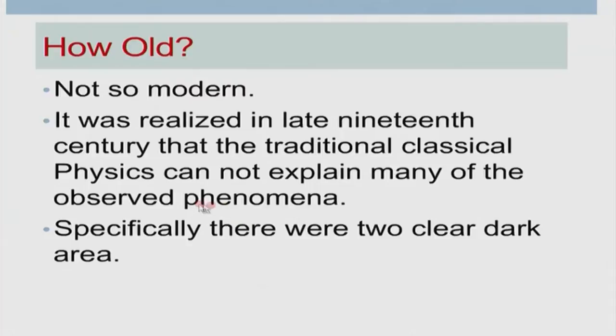The basic problem was that in science we always follow the experiment. If there is an experimental observation, we must develop a theory to understand it and interpret it. At that time there were a series of experiments which it was not possible to understand clearly. Most of these experiments can be classified into two clear dark areas, which I will define — two clear dark areas in which people found they could not explain results on the basis of traditional classical physics.